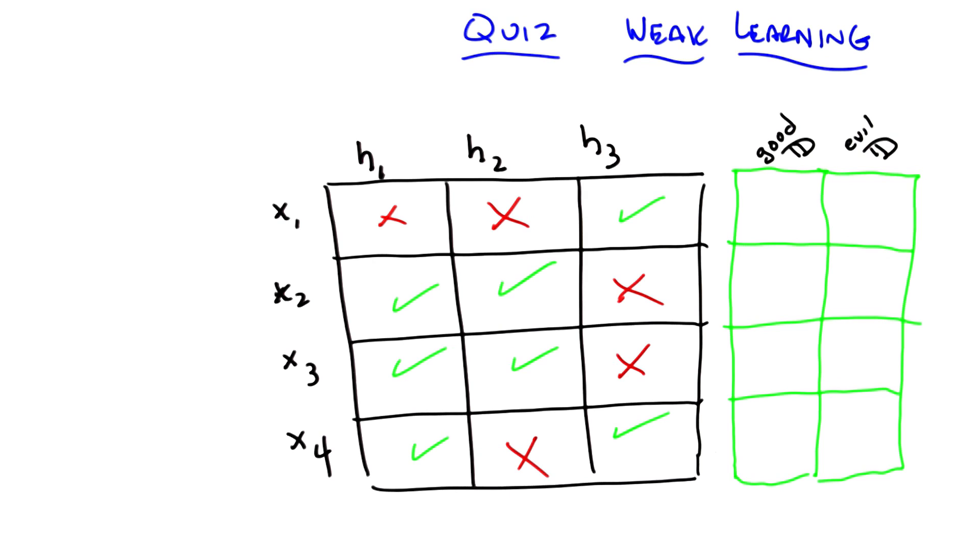So greater than a half in this case would mean three out of four, correct? Oh no, no, you want to use that definition that actually took into consideration the distribution. Exactly. That's the whole point. You always need to have some distribution over your examples to really know what your expected error is.